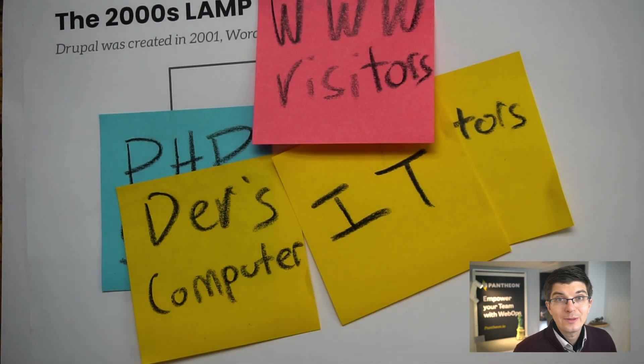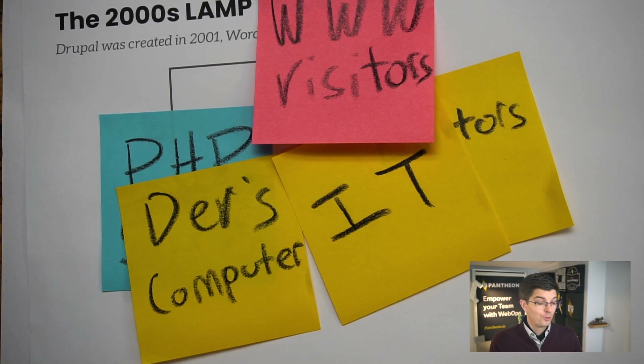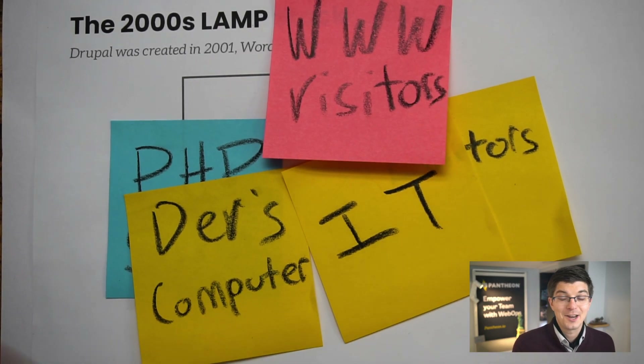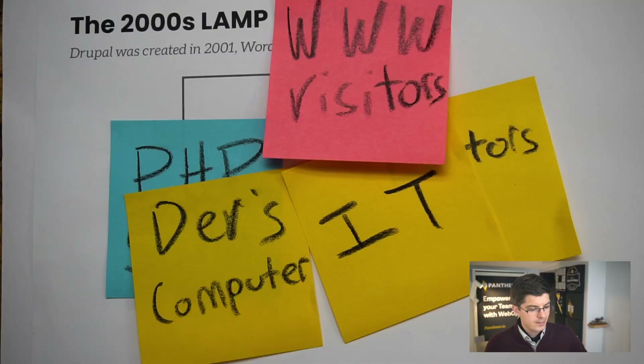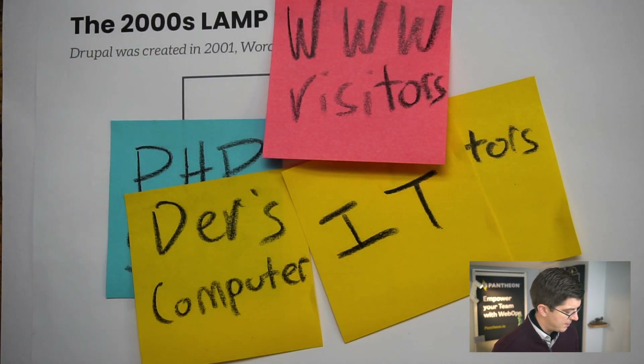Time moves forward, we get the LAMP stack — it works well. But of course scaling the LAMP stack is kinda hard, developer workflows are kinda hard. That's where companies like Pantheon come in around the start of the 2010s. We bring containers and clouds, and we're totally ready to solve all of these challenges.